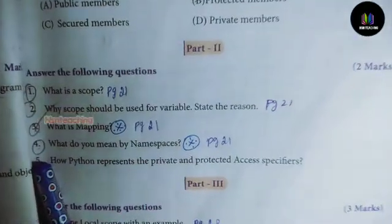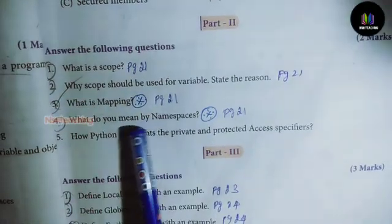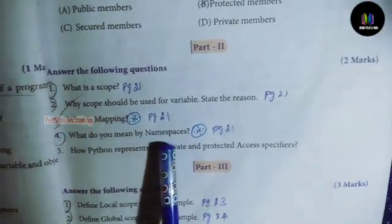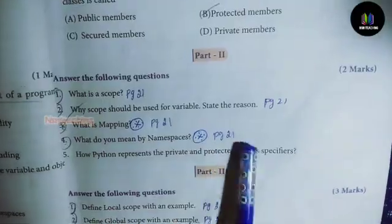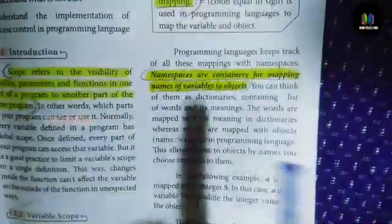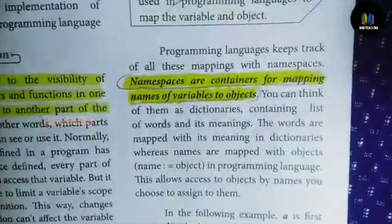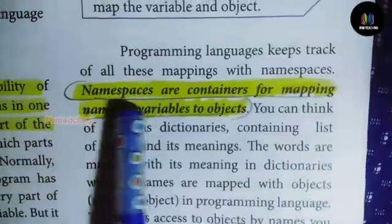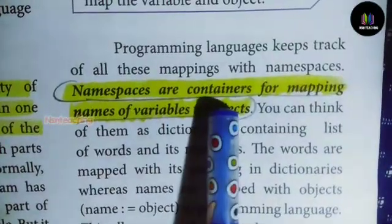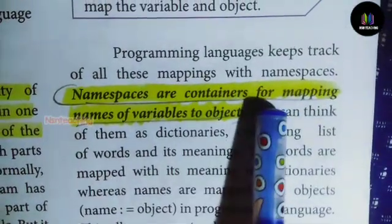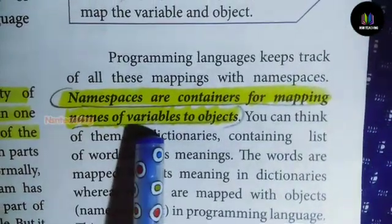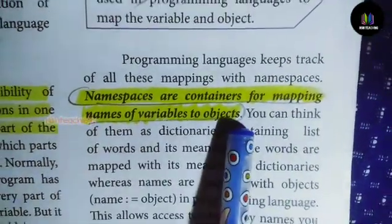Question number 4: What do you mean by namespace? Answer (page number 21): Namespace or containers for mapping names of variables to objects.